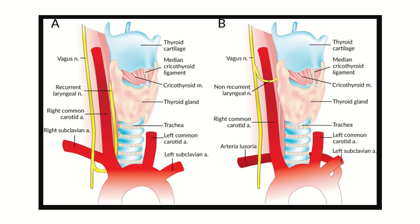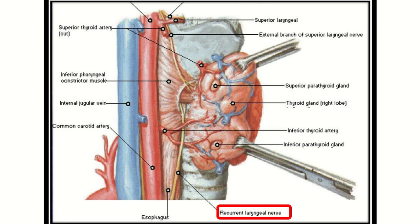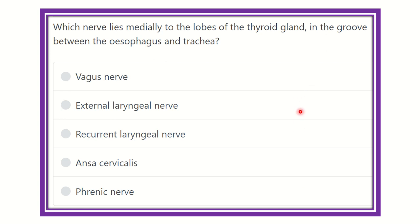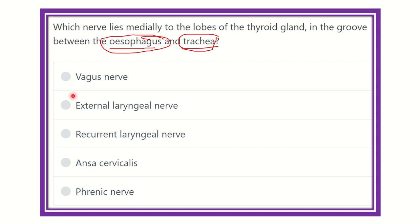Welcome to another lecture for a mercy section. This session is a question and answer session. The question is: which nerve lies medially to the lobe of the thyroid gland in the groove between the esophagus and the trachea? The options are: vagus nerve, external laryngeal nerve, recurrent laryngeal nerve, ansa cervicalis, and phrenic nerve.